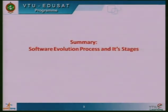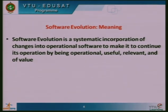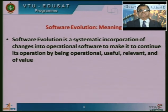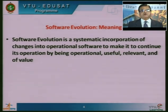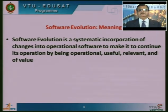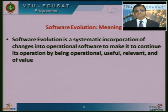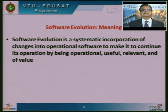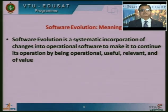We shall have a look at the summary of the earlier session and understand the software evolution process and its stages through an example. Software evolution is a systematic incorporation of changes into operational software to make it continue its operation by being useful, relevant, and of great value to the user as well as the customer, so that the customer's business can outperform others.